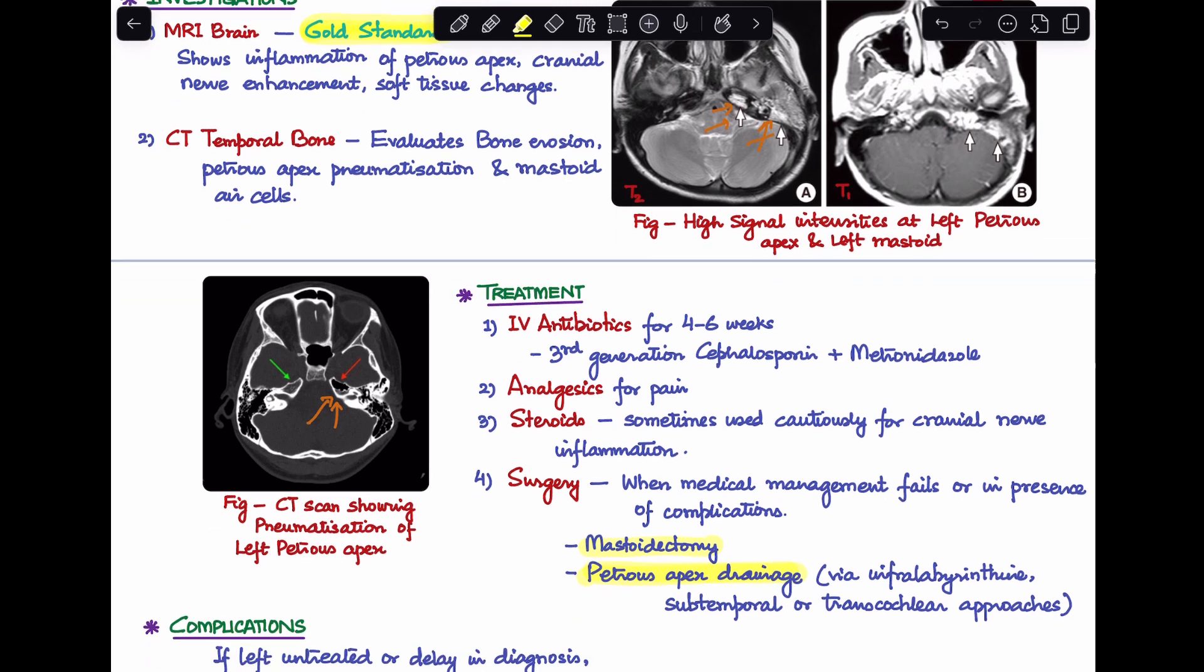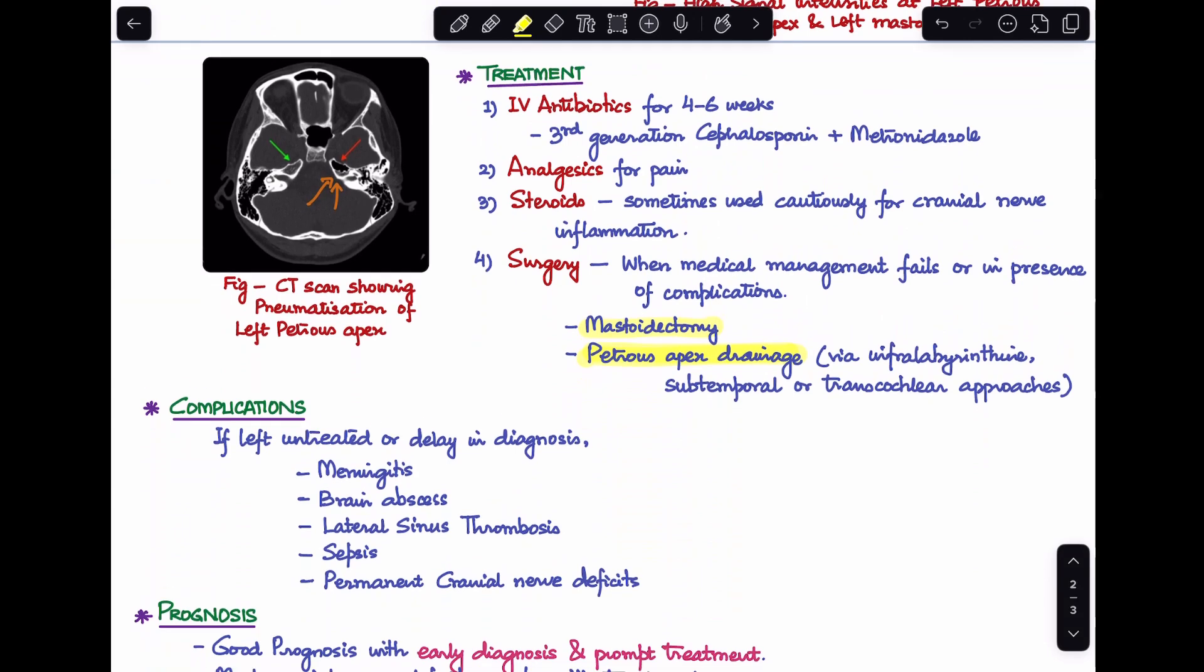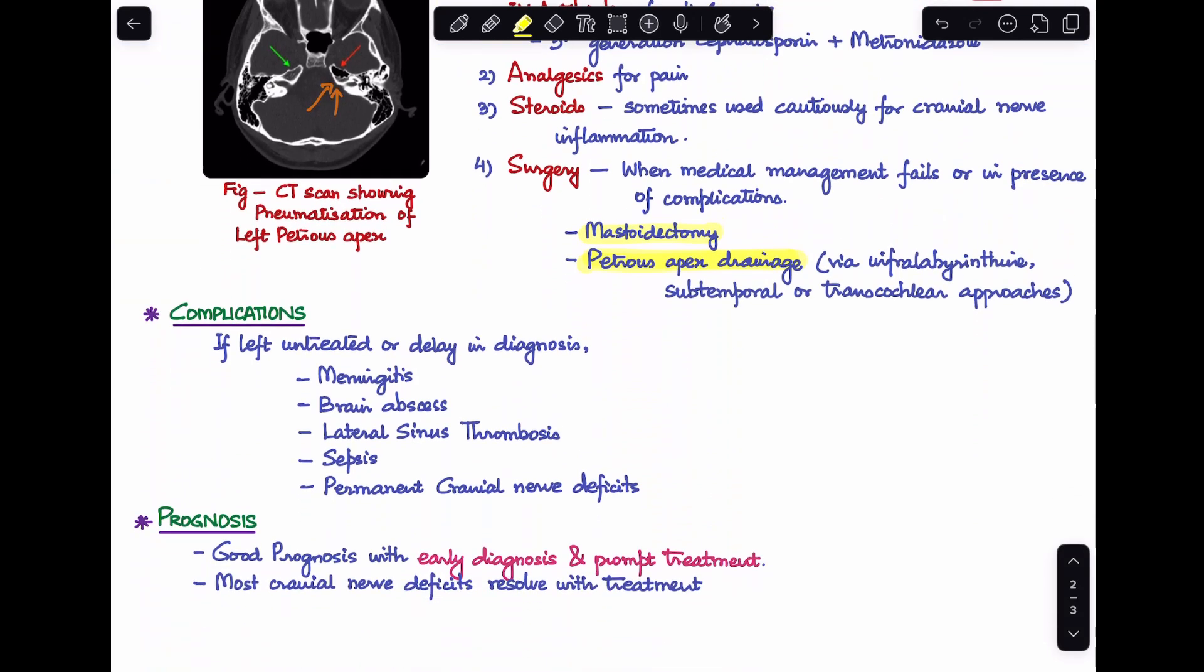What are the complications that can happen as a result of Gradenigo's syndrome? If it is left untreated or there's any delay in diagnosis, it can lead to meningitis, brain abscess, lateral sinus thrombosis, sepsis, and even permanent cranial nerve deficits. That brings us to the prognosis factor. Do the cranial nerve deficits that you see in Gradenigo's syndrome reverse when you treat the disease?